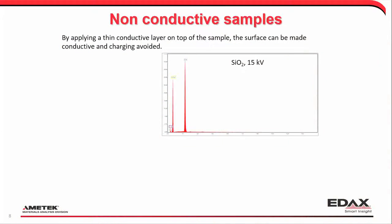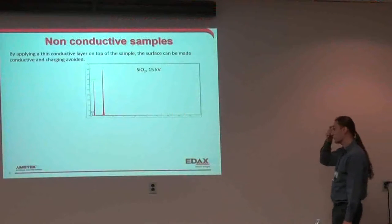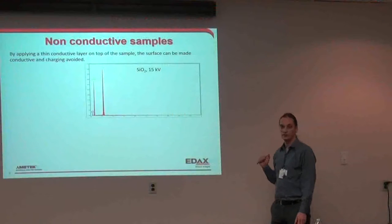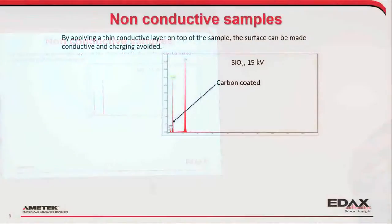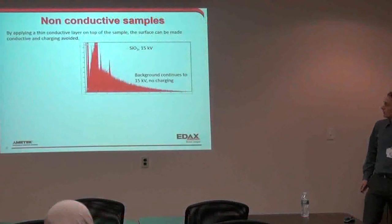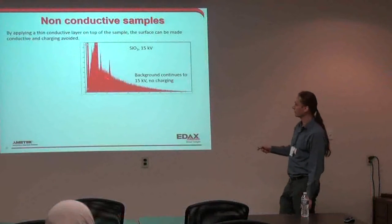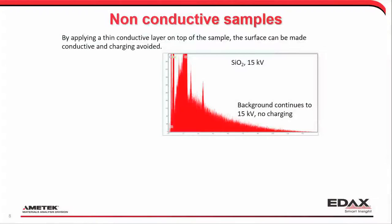What can we do? If we have a non-conductive sample, we can put a thin layer of conductive material on top to avoid charging. Here's silicon dioxide at 15 kV — a glass that is quite non-conductive. We see a small carbon peak because this sample has been carbon coated. If we zoom in on the background, we can see it tails off nicely out to 15 kV. There's no charge buildup on this one, even though it's non-conductive, because of that thin carbon layer on top.